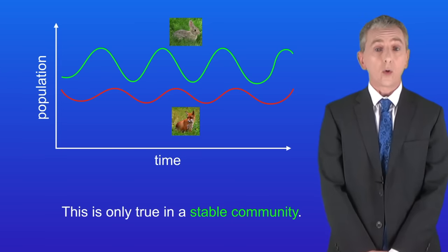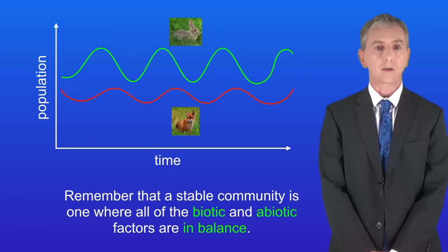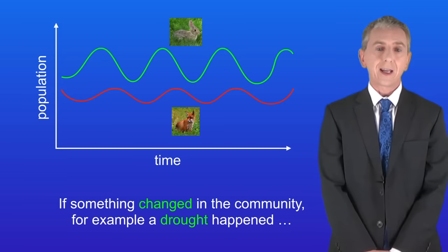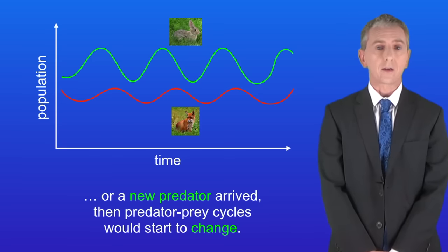Now I should just point out that this is only true in a stable community and remember that a stable community is one where all of the biotic and abiotic factors are in balance. If something changed in the community, for example a drought happened or a new predator arrived, then predator prey cycles would start to change.